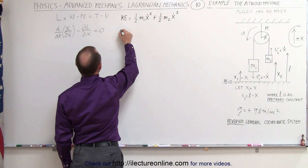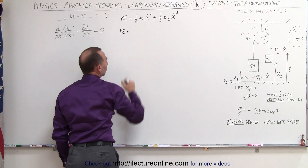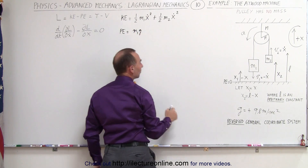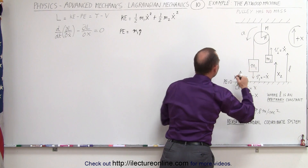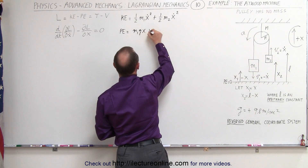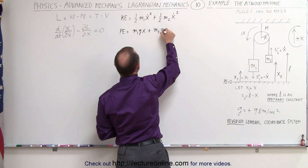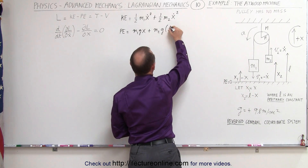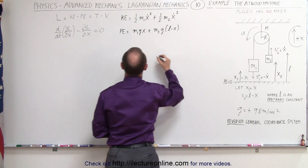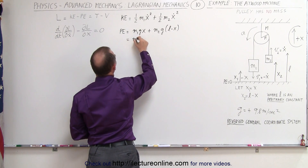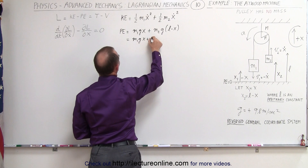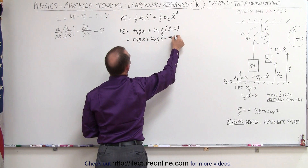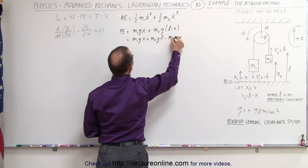The potential energy is equal to m1g times the height — in this case the height will be x — plus m2g times its height x2, but x2 is L minus x. In other words, this can be written as m1gx plus m2gL minus m2gx.